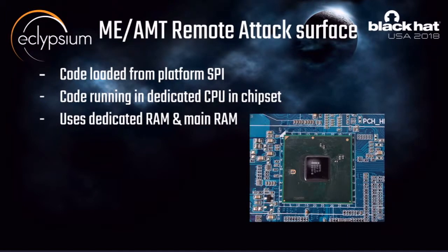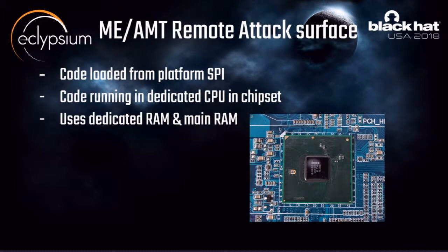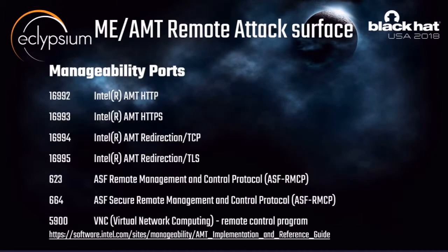Intel ME/AMT has a dedicated CPU, its own SRAM, and shares RAM with the host. It loads its code from the main platform flash. If BMC is management for servers, AMT is management for enterprise clients — equivalent in functionality but not the same physically. Enterprises use these to provision systems remotely, install OSes, configure BIOS and hardware. From a web attack surface perspective, AMT has a web interface, VNC, and serial over LAN, and we all know the famous authentication bypass vulnerability from about a year and a half ago.